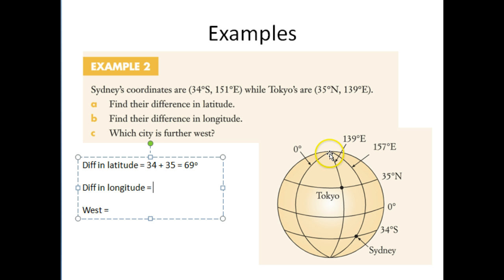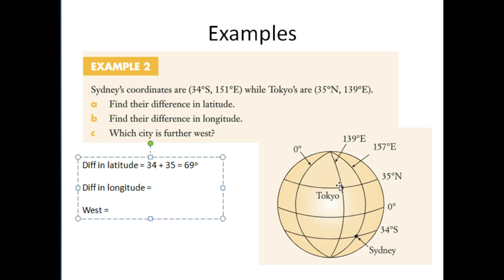Difference in longitude. Now, this is our prime meridian here, and they're both in the eastern hemisphere. I've just noticed an error there — it actually says 151, so I'm just going to change that. What we want to do is subtract the two because we want to find the distance from here to here. So, we want to go 151 minus 139, which gives us 12 degrees.